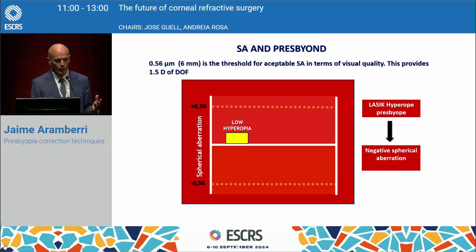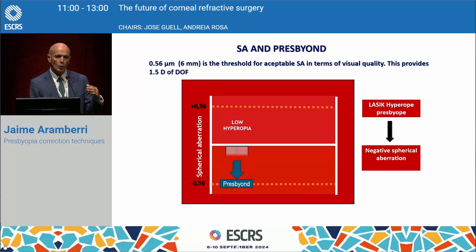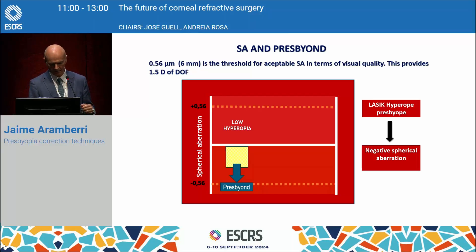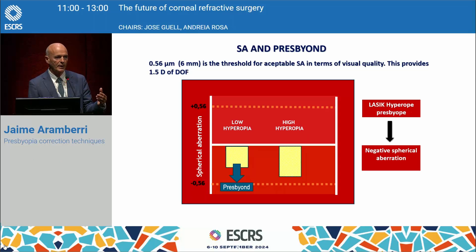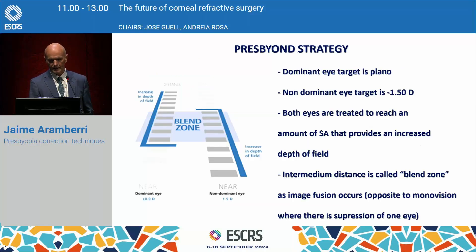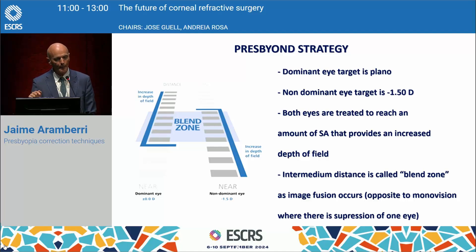In hyperopia it's quite the opposite: here we are moving to negative spherical aberration, so PresbyOn will increase the negative spherical aberration, making the cornea more prolate. If it's high hyperopia, PresbyOn will probably do nothing because naturally the correction of a high level of hyperopia will induce enough spherical aberration to be in the sweet zone. The dominant eye is targeted to plano, the non-dominant to -1.5, and both eyes are treated to reach that amount of spherical aberration that will provide the increased depth of field.